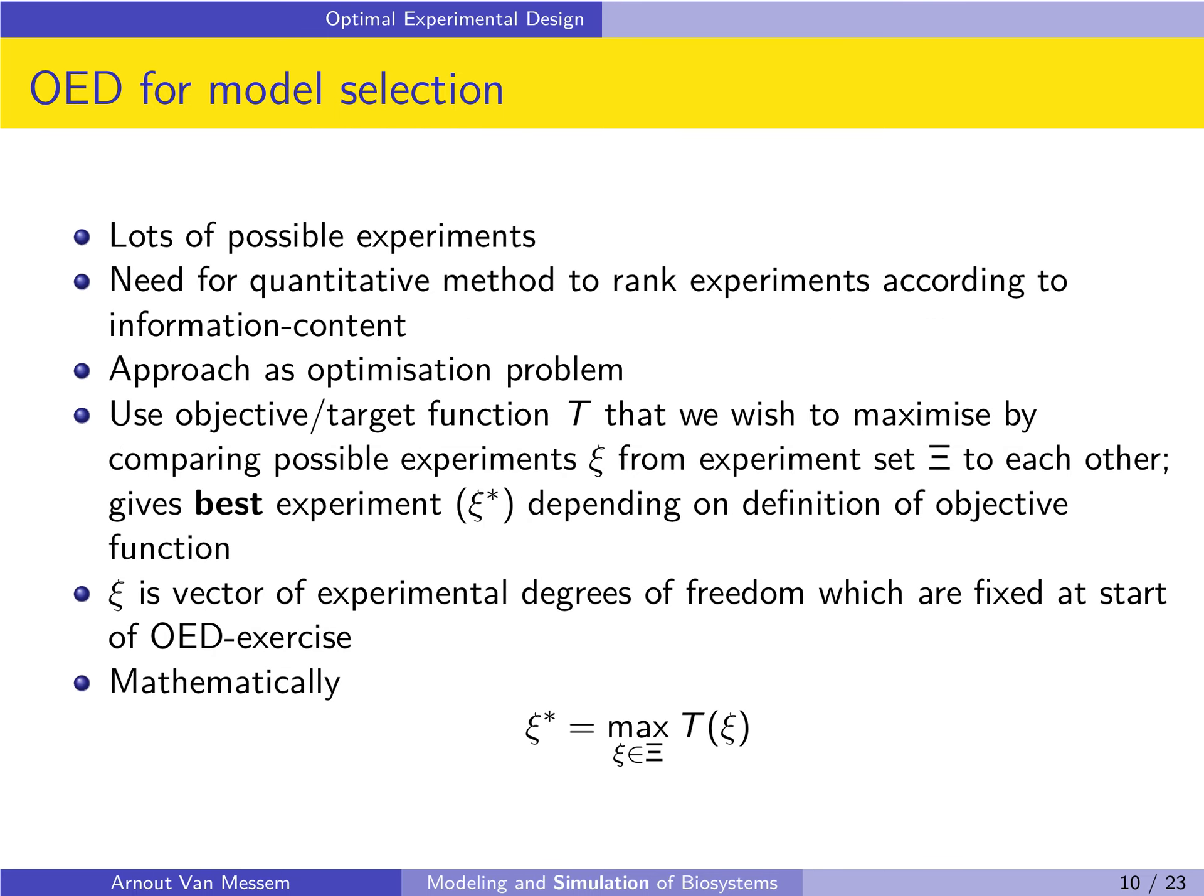There are a lot of experiments possible, and so we need a quantitative method to rank the different experiments according to their information content. The way to do this is to approach optimal experimental design as an optimization problem. We will use an objective function, a target function T that we wish to maximize by comparing possible experiments ξ from experiment set Ξ to each other.